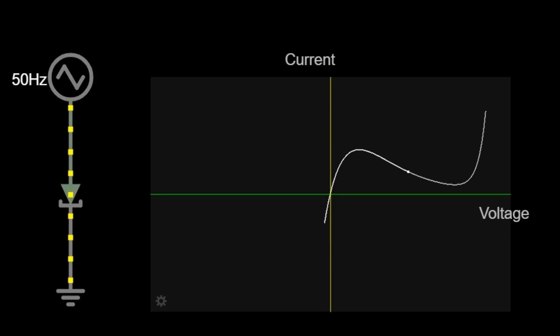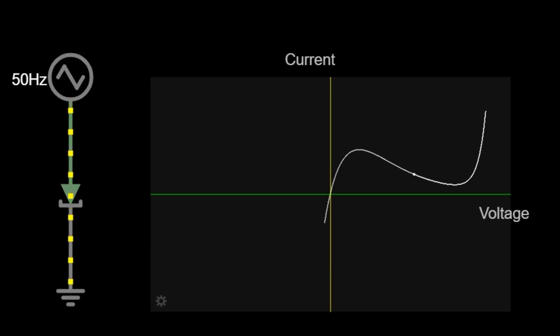After this, if we keep increasing the voltage even more, the tunnel diode starts acting normal again, just like a regular diode, and the electricity starts flowing more and more.